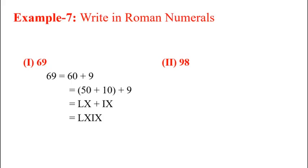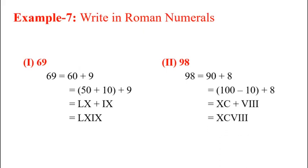Next number is 98, we have to write 98 in Roman numerals. So 98 is equal to 90 plus 8, again 90 is equal to 100 minus 10. So 100 minus 10 that is XC, C is for 100, so 10 is subtracted, so X is written in the left side of C. And 8 is VIII, so XC plus VIII. So the Roman numeral of 98 is XCVIII. In this way you can write the Roman numerals of any number.